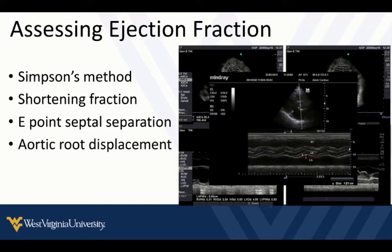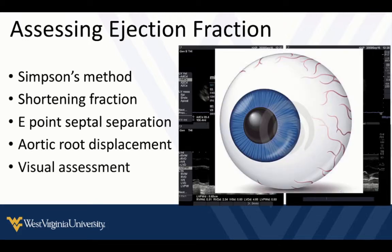The amount that the aortic root moves during the cardiac cycle — aortic root displacement — has also been looked at for assessing ejection fraction. None of these measures are perfect. The one I think is best with some practice and experience is visual assessment. There's good literature showing that emergency physicians and point-of-care users with some practice can make pretty good estimations with visual assessment of ejection fraction. That's what I recommend, but I wanted you to know about these other methods so you can look into them further if interested.